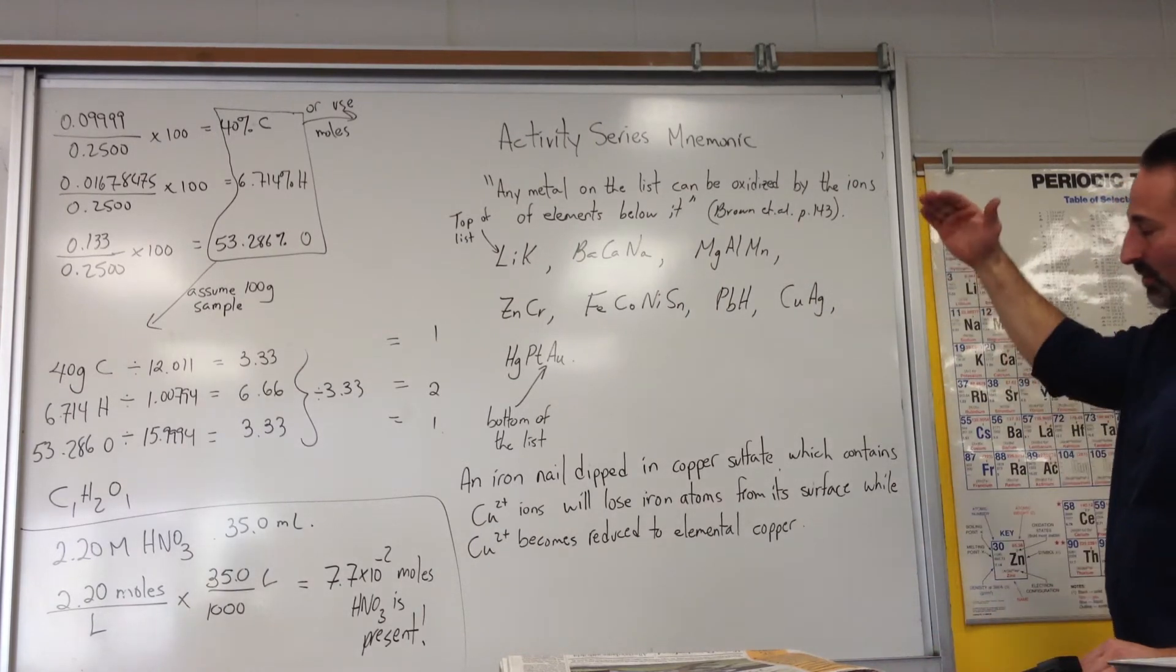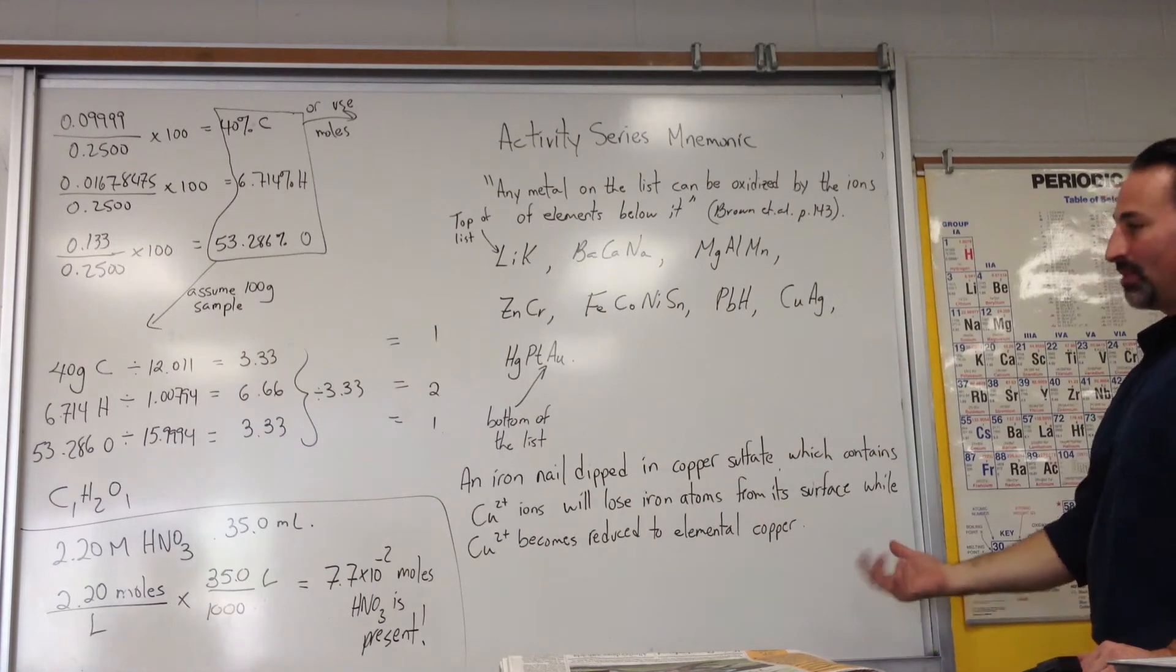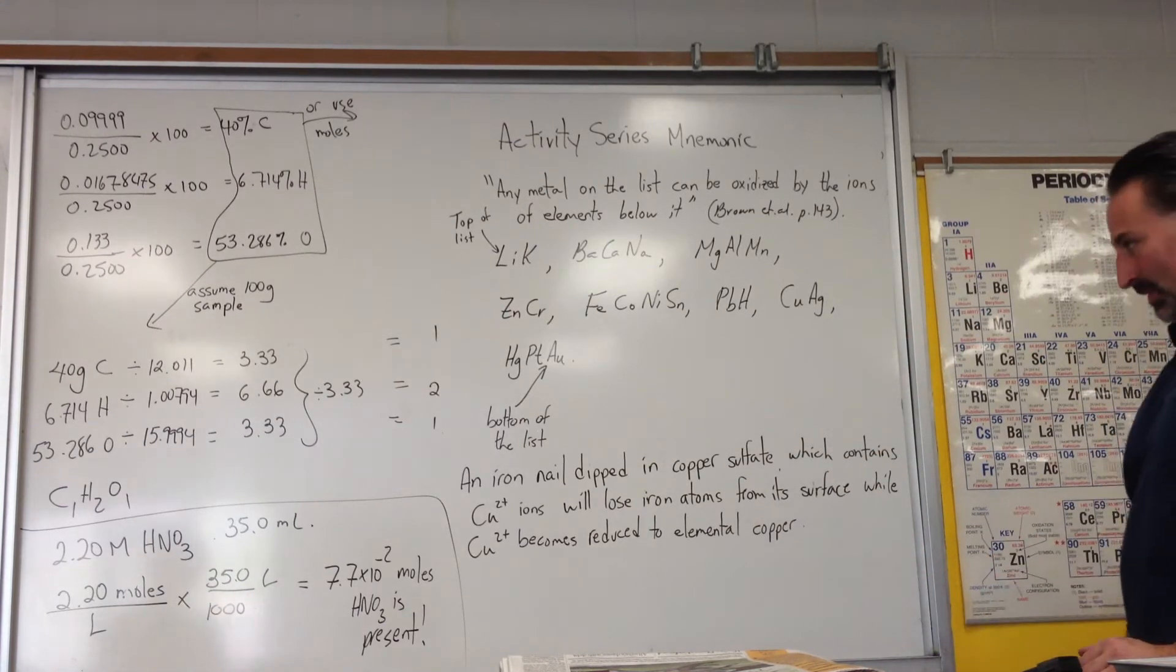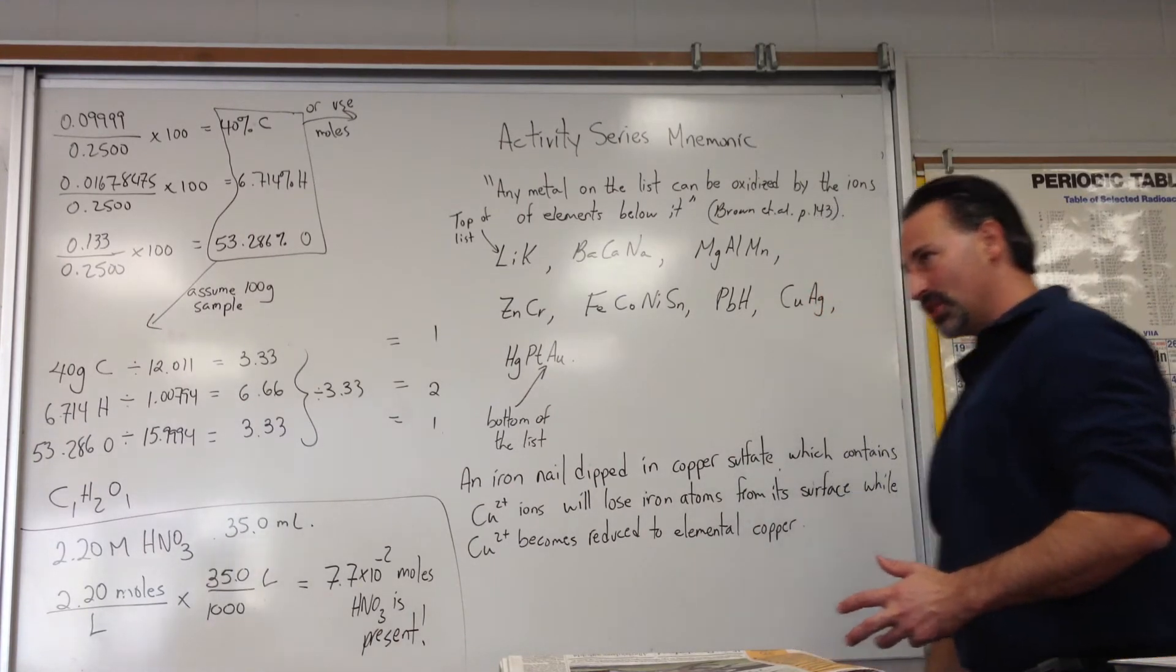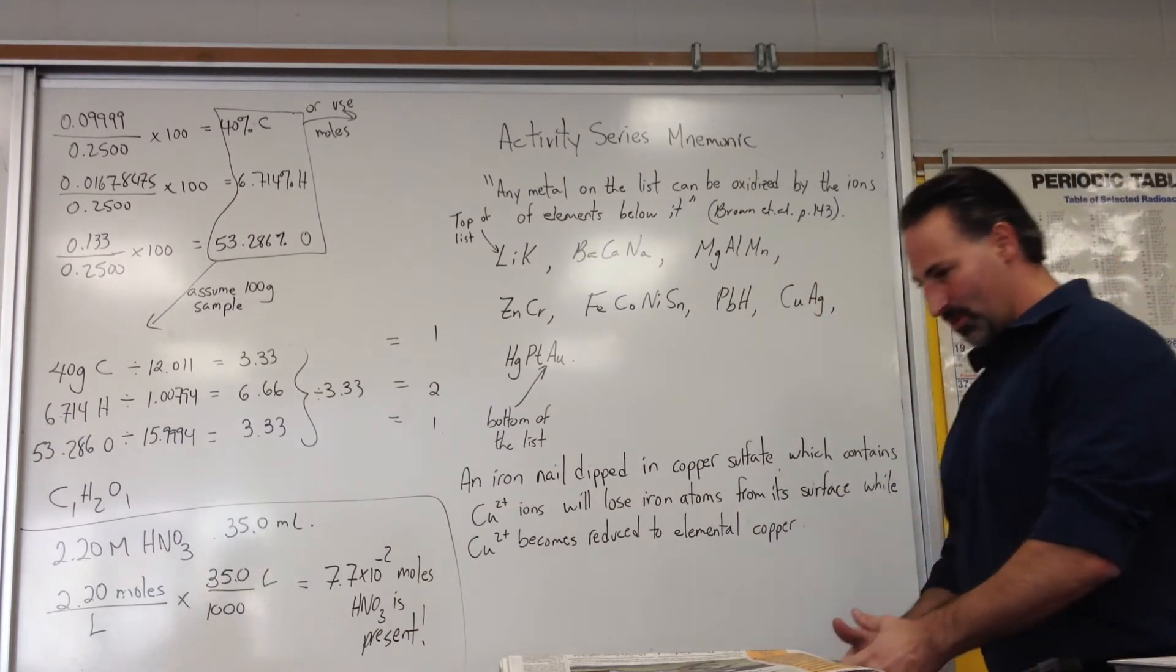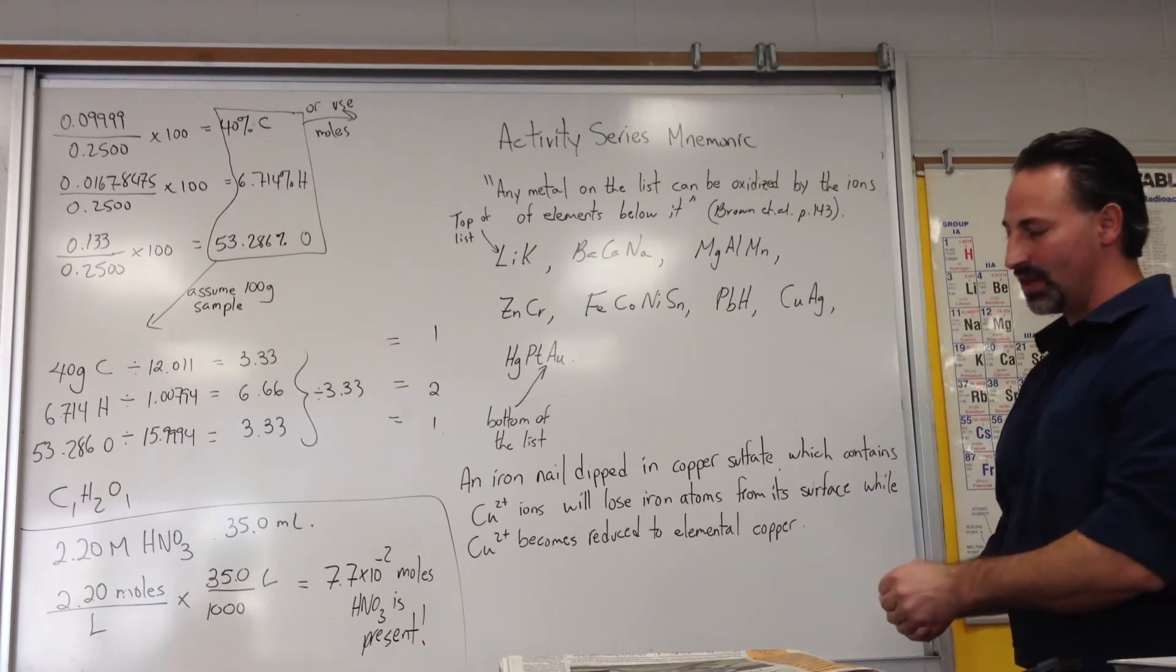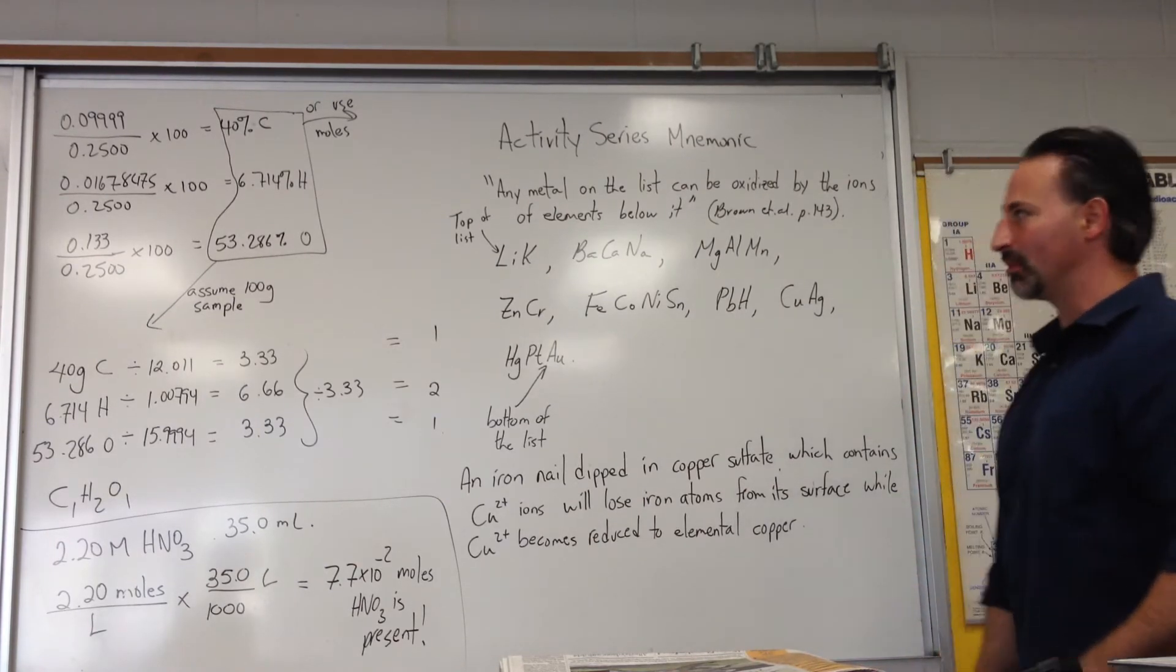So if a metal is higher up, it'll give up its electrons, and the metal below it will take the electrons. To help you remember the image, think of somebody dropping something from the roof. The metal higher up on the list is dropping its electrons to the metal below it.